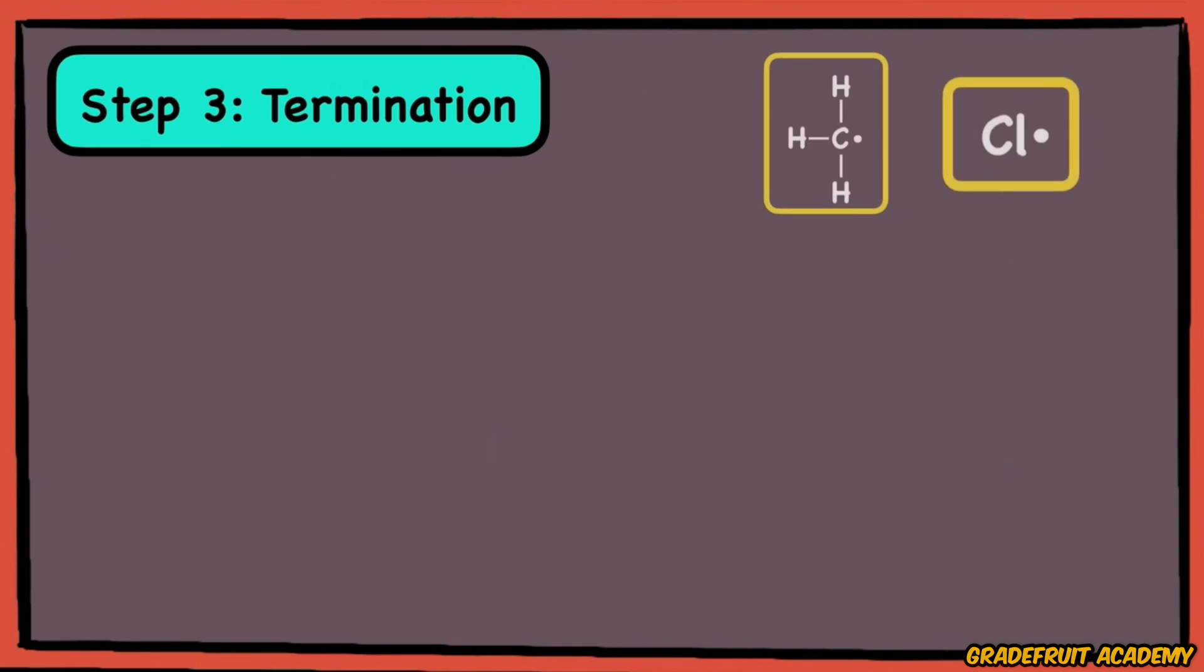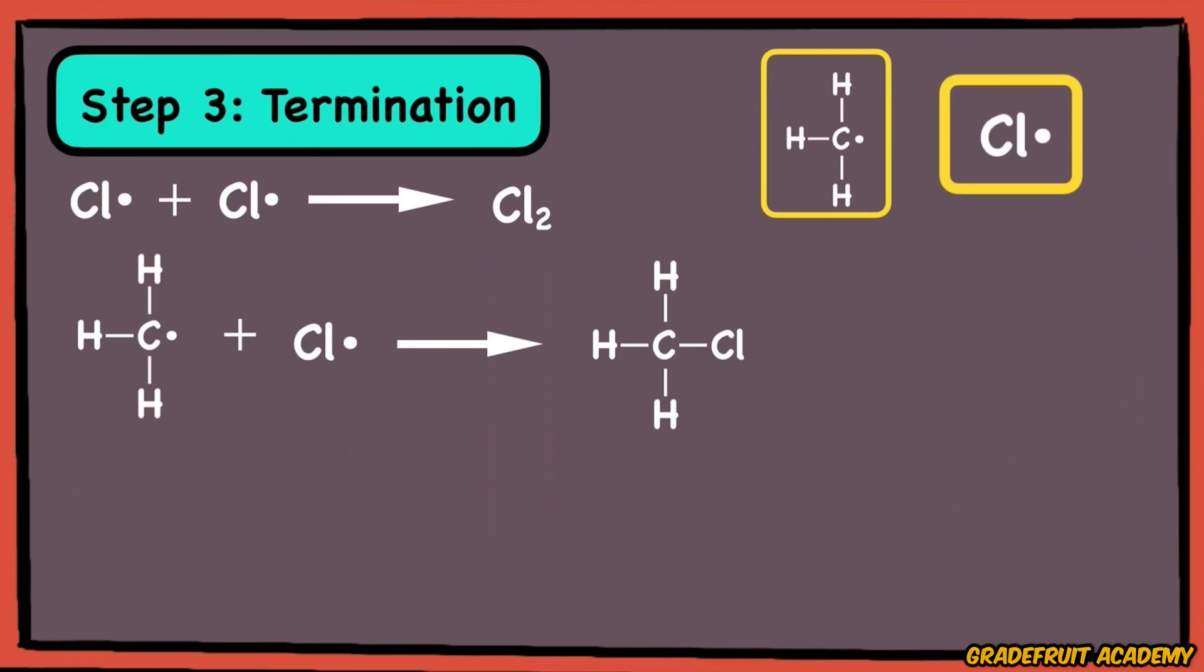Hence, to terminate the process, we will just need to remove all the free radicals by combining two free radicals. Because the two unpaired electrons will form a stable covalent bond, rendering the newly formed molecule to be stable and much less reactive. This can happen between any two radicals of any type and combination as the main goal is to just remove any free radicals from the system.